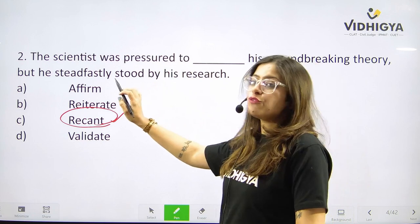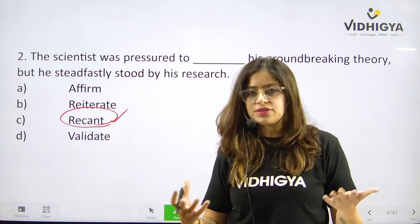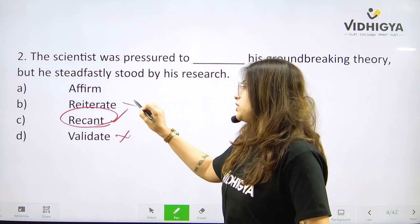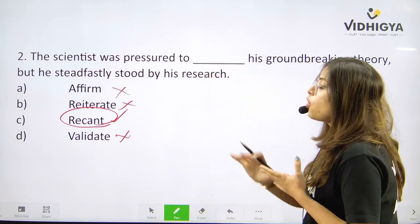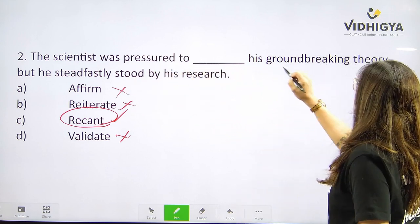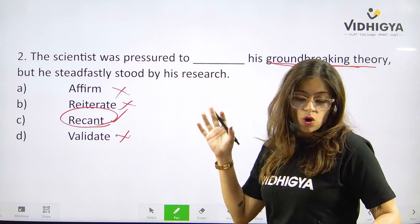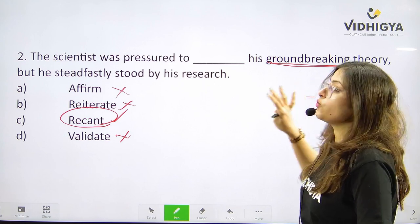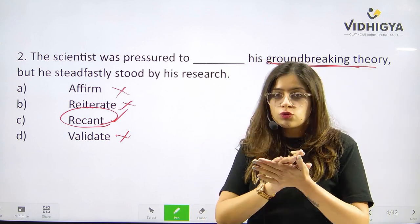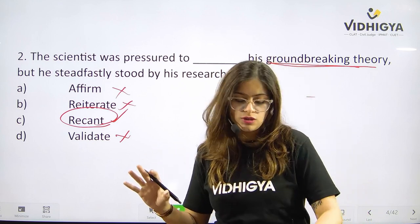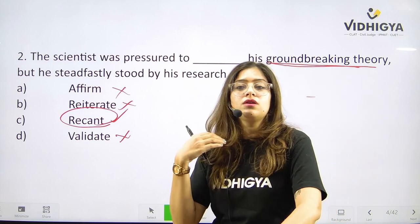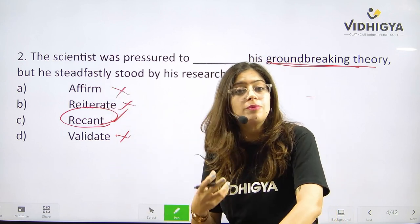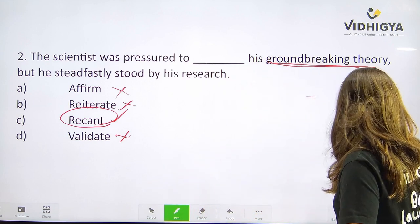Affirm means confirming that whatever he has said is correct. Reiterate would be just to repeat and say it again. Validate means to give it validation — again affirming whatever he stated is correct. But the context says the scientist was pressured to withdraw his groundbreaking theory — they wanted him to publicly disavow his views. So affirm, reiterate, and validate are all incorrect. Recant shows they wanted him to publicly not affirm his theory. Answer is C. Recant.